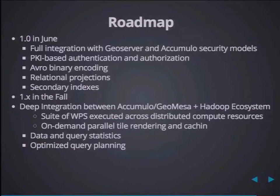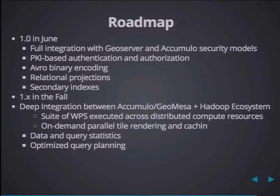A quick roadmap for GeoMesa: we're pushing for a 1.0 release in June. We are implementing full PKI-based authentication and authorization to integrate with the cell-level security of Accumulo. We have already implemented Avro binary encoding and relational projections that allow us to subset data and rapidly return just what we need for each query. In the fall, we're looking at integrating deeply with GeoServer and the Hadoop ecosystem — WPS services will be executed across compute paradigms like Storm, MapReduce, and Spark. Tile caching can be pushed into HDFS or within Accumulo, and we're also looking at data and query statistics to improve query planning performance.